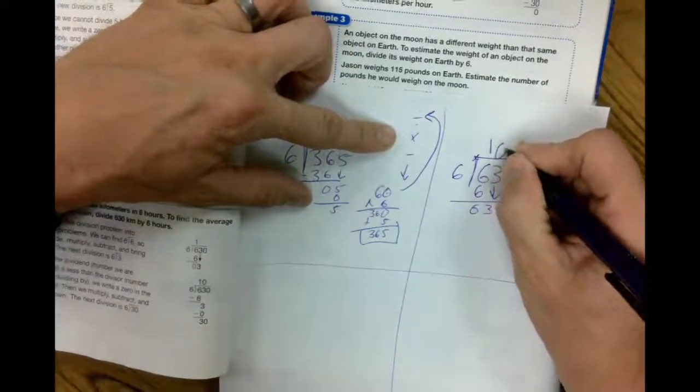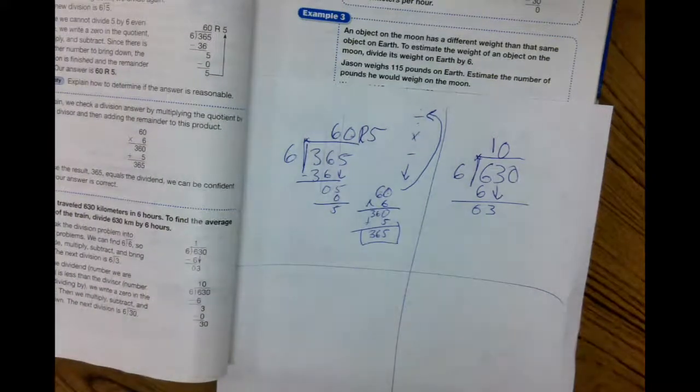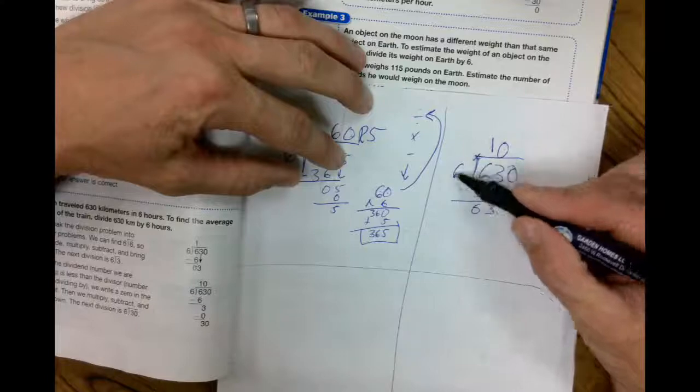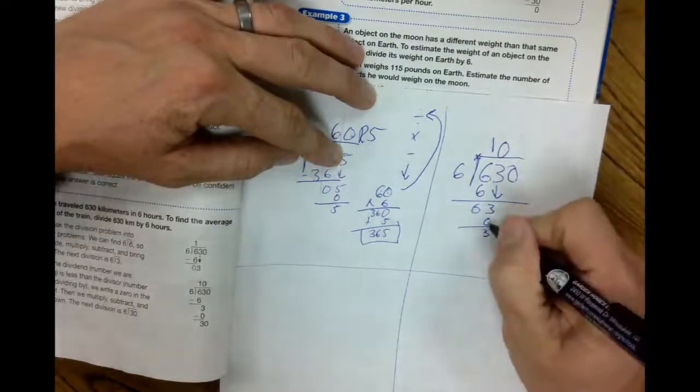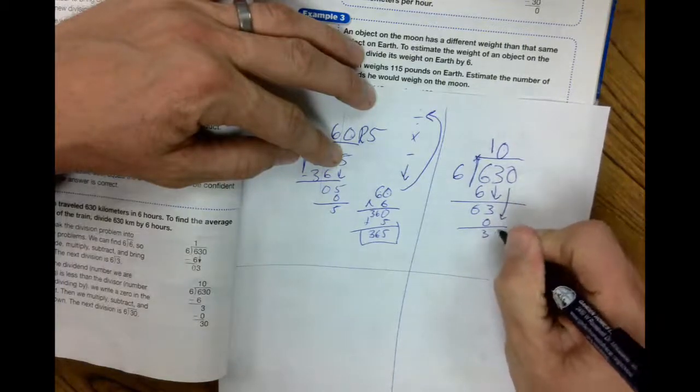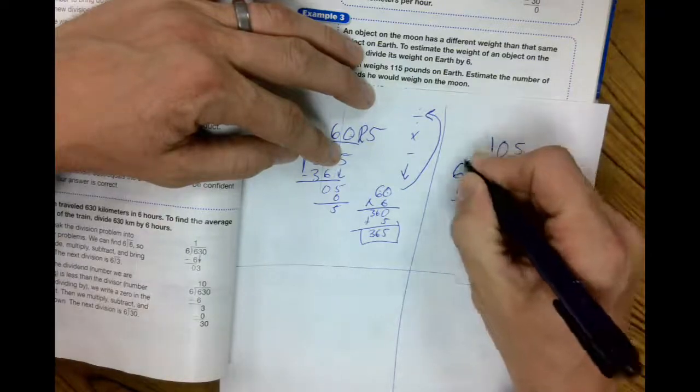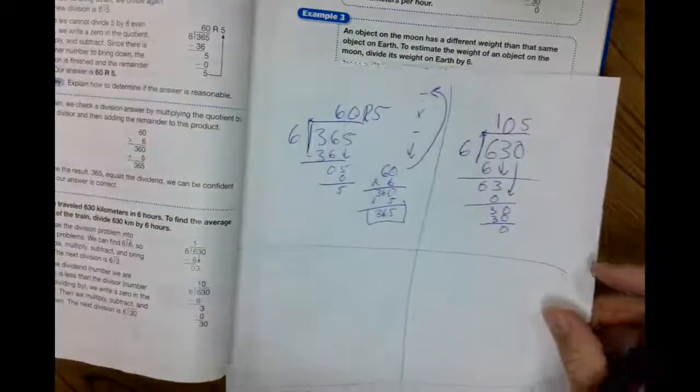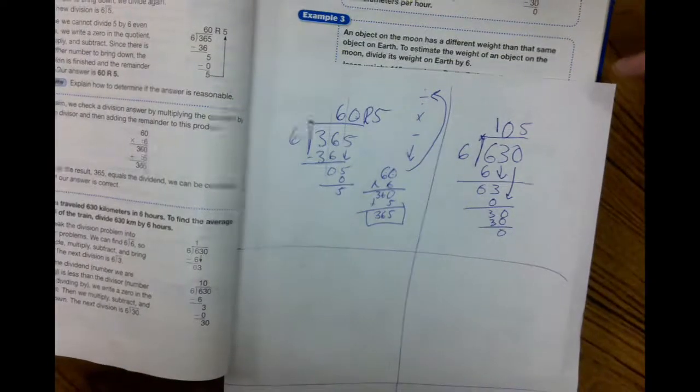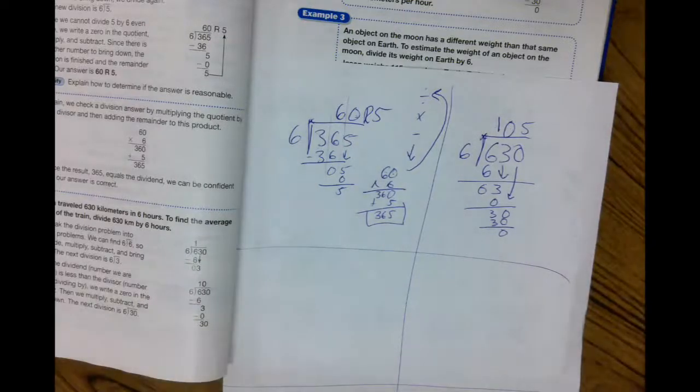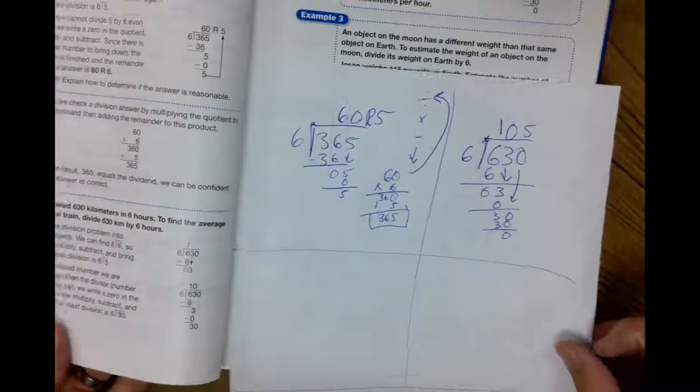You have to write the zero there. Notice it's a placeholder without it. Our answer would be way too small. We're going to multiply with it. Zero times six is zero. I know you knew that. Bring down the three. I'm sorry. Subtract. Three. Bring down the zero. How many times does six go into 30? Five times. Five times six is 30. And you get zero. Now, guys, if you wouldn't have zero in there, you'd have 15. How would you like to have $15 instead of $105? It makes a big difference. So today we're dividing with a zero in the quotient. Lesson 34. Dividing with a zero in the quotient.